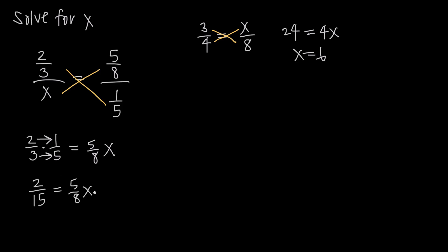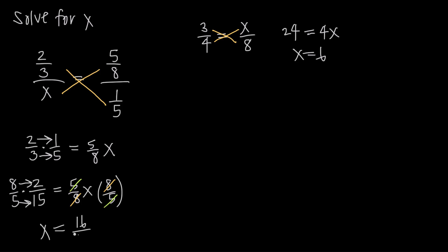So we get 2 over 15 is equal to 5 eighths times x. Now we try to solve for x. If we multiply the right-hand side by 8 over 5 — the reciprocal of 5 eighths — the 8s and the 5s in the numerator and denominator will cancel, leaving us with just x. We also have to multiply the other side by 8 over 5 to keep the equation balanced. So x is equal to 8 times 2 over 5 times 15, which gives us 16 over 75.